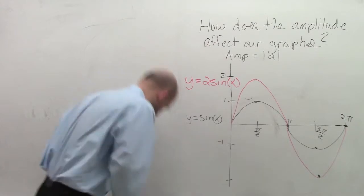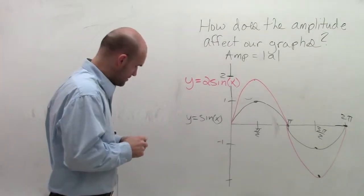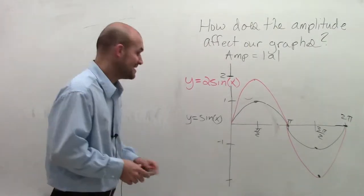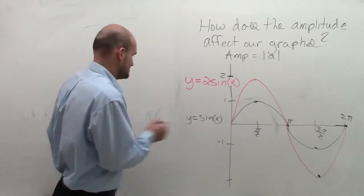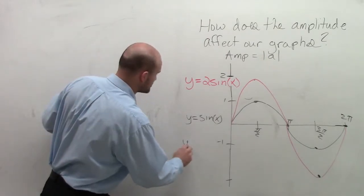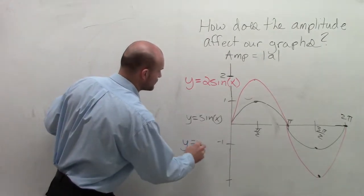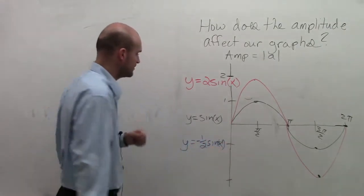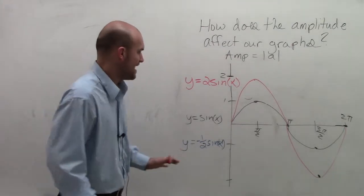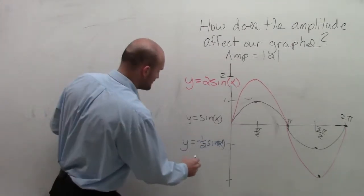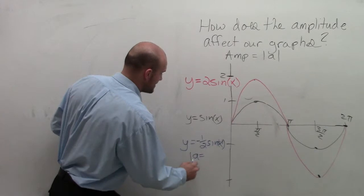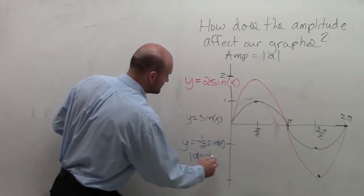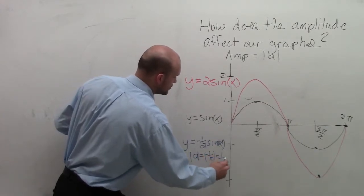So now let's take a look at when we have an absolute value that's less than 1. Let's make it easy: y = negative 1/2 sin(x). So when looking at negative 1/2, we now know that my amplitude, my a, is going to be the absolute value, which is equal to 1/2.